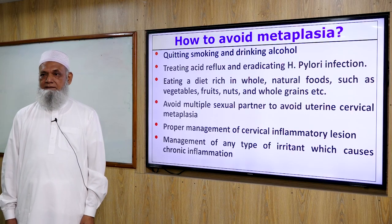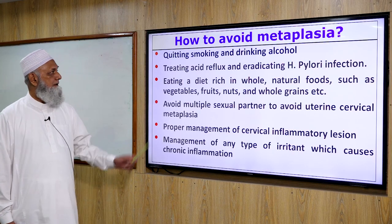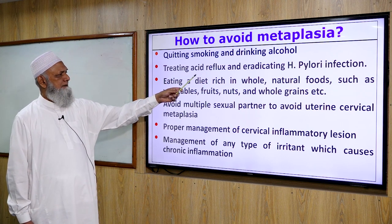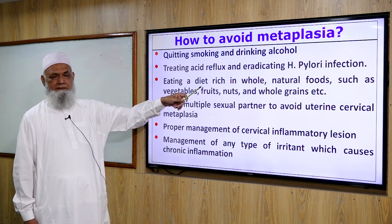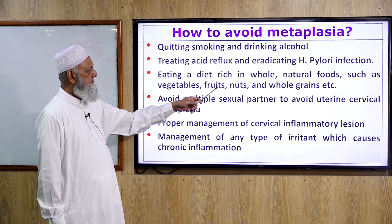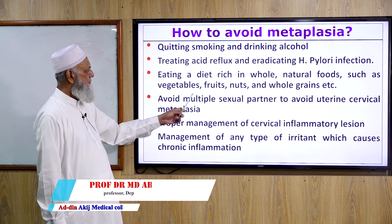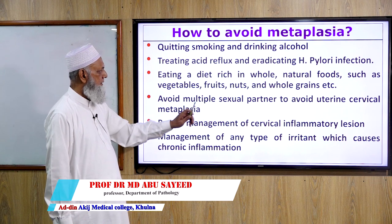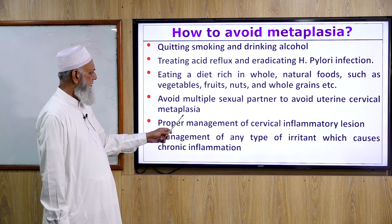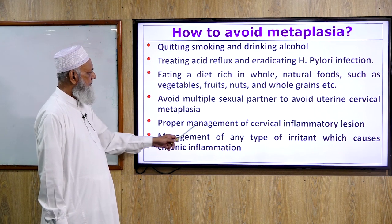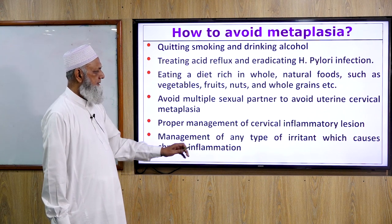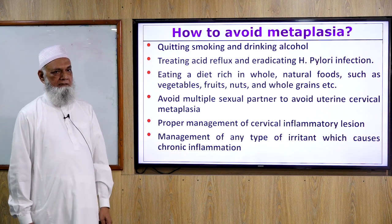How to avoid metaplasia: quitting smoking and drinking alcohol, treating acid reflux and eradicating H. pylori infection, eating a diet rich in whole natural foods such as vegetables, fruits, nuts and whole grains. Avoid multiple sexual partners to avoid uterine cervical metaplasia. Proper management of cervical inflammation and management of any type of irritant that causes chronic inflammation.